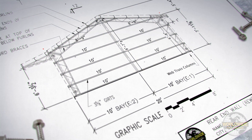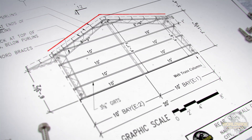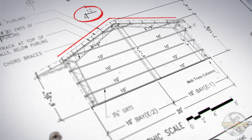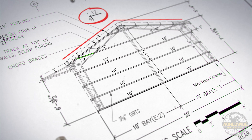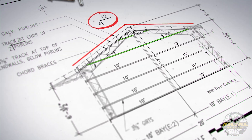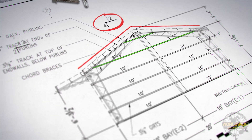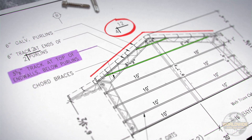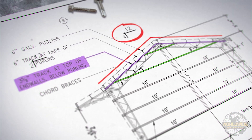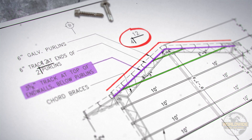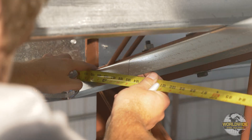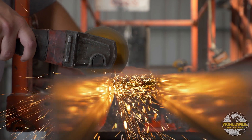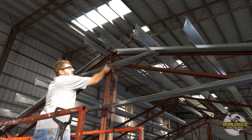On most buildings, the slope or pitch of the roof is high enough that you will reach a point where the girths will need to be cut and installed or nested into the end wall track that rests underneath the roof purlins. Please proceed to the upper end wall girth installation video for your next steps.